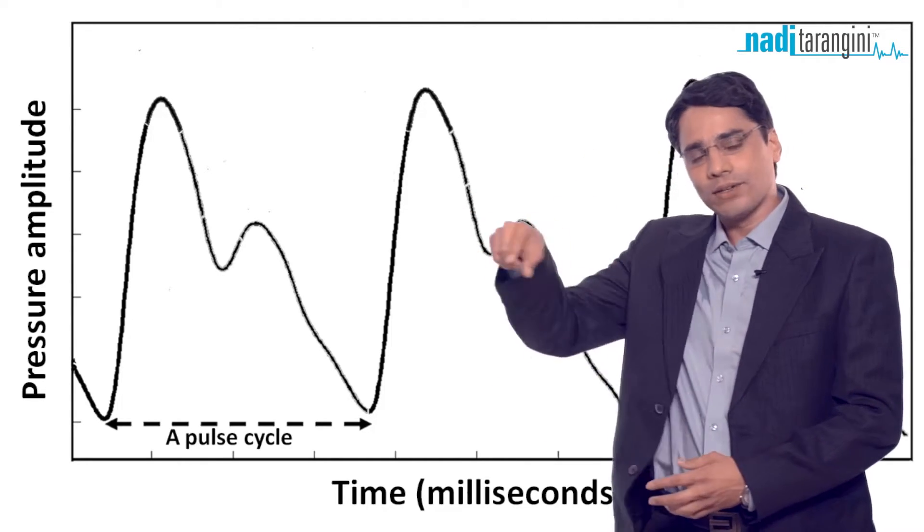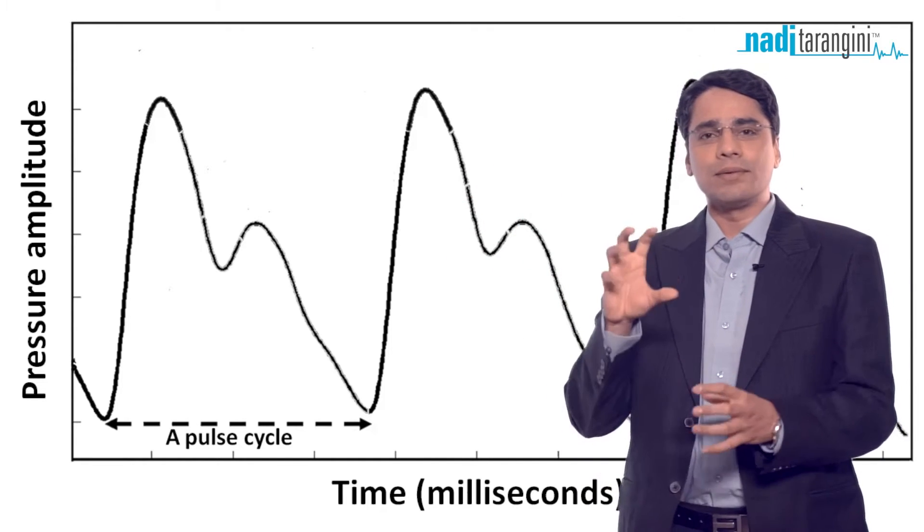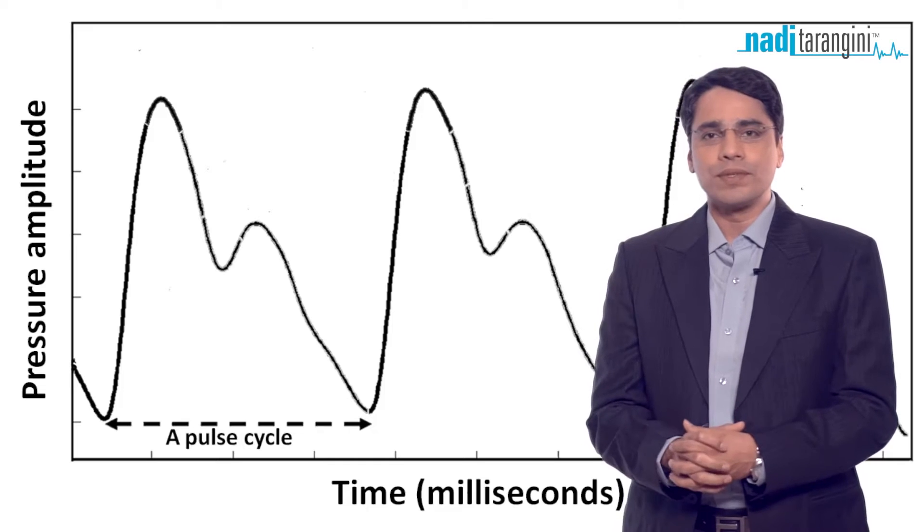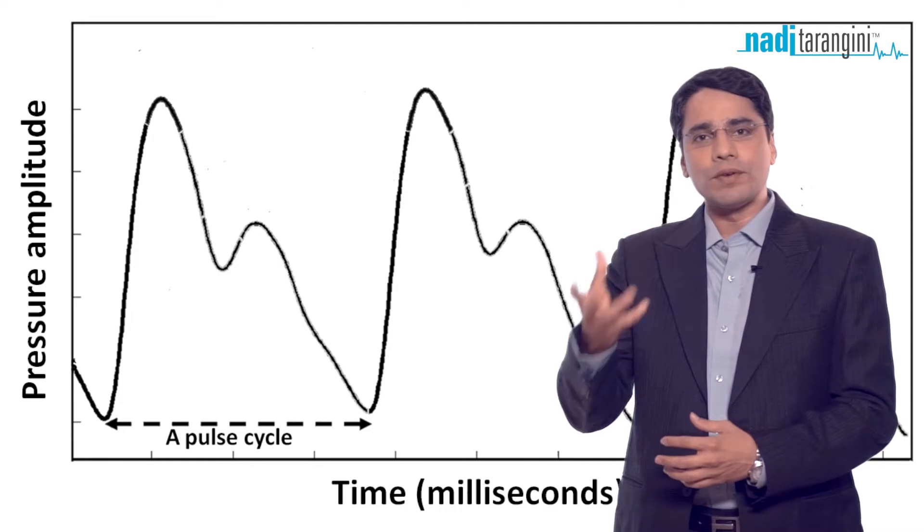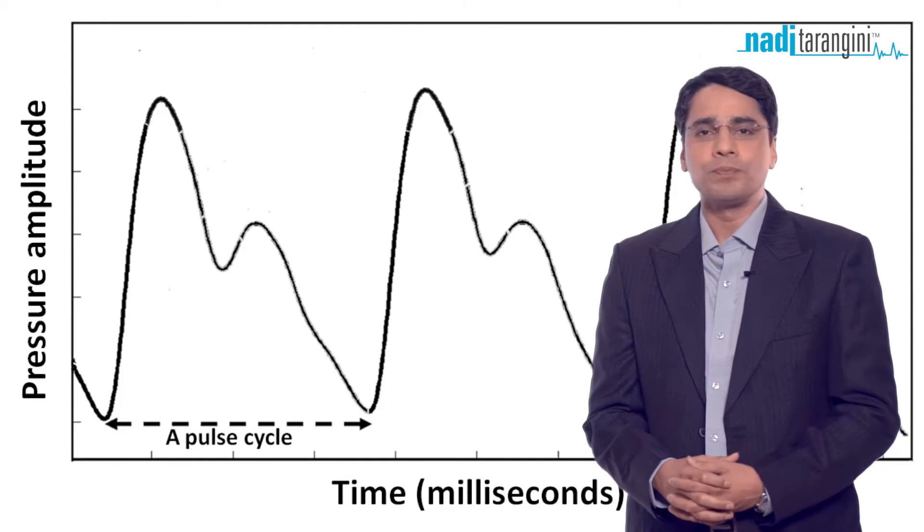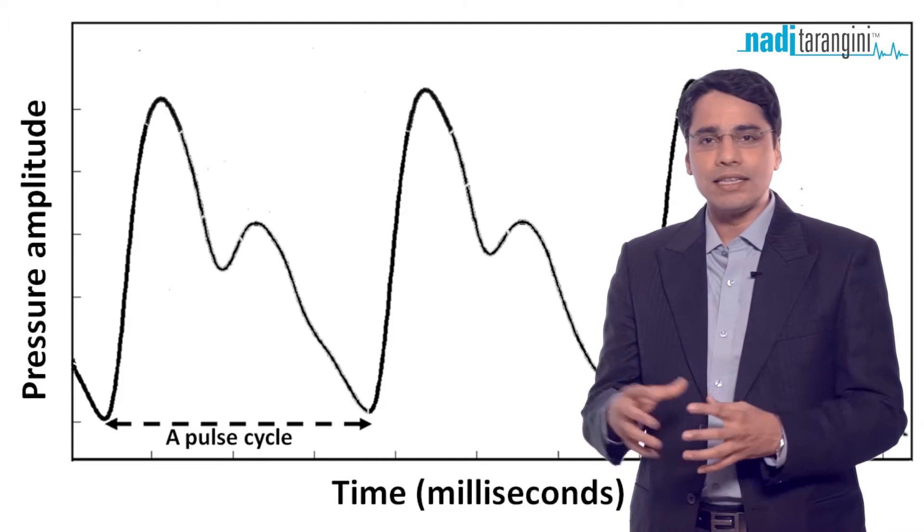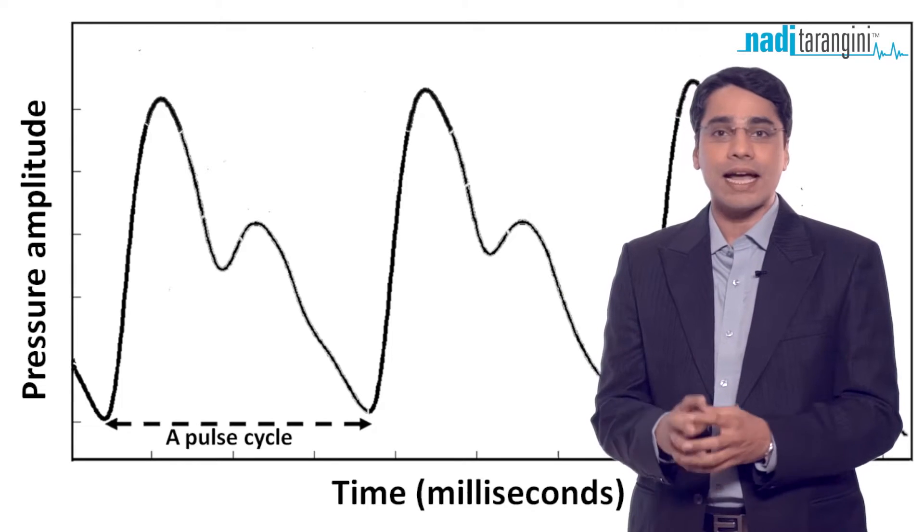Every Nadi goes up and down in a rhythmic fashion. As the heart is pumping in rhythm, the pulse also moves rhythmically. But because of variability and the functioning of all the organs, the pulse is not exactly rhythmic. Every rhythm is different, every pulse beat is different. It has some variability.